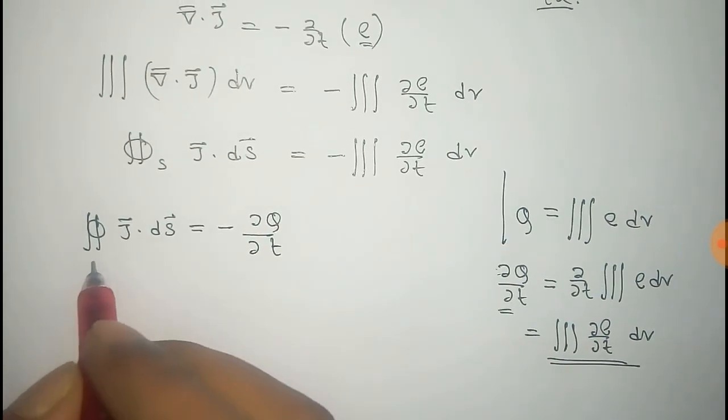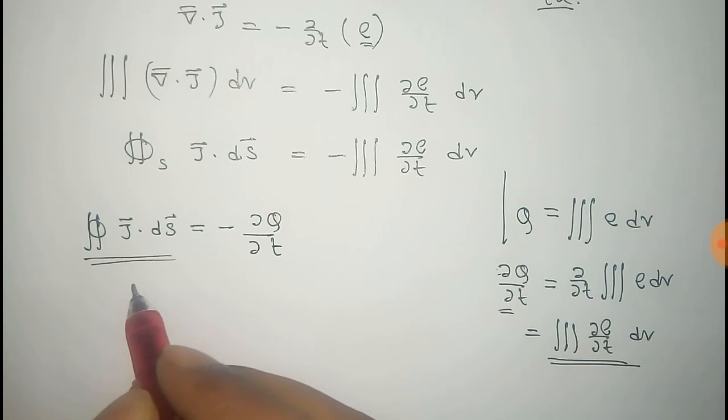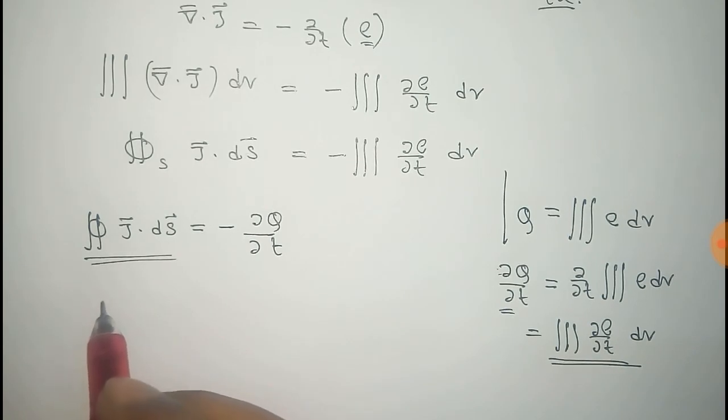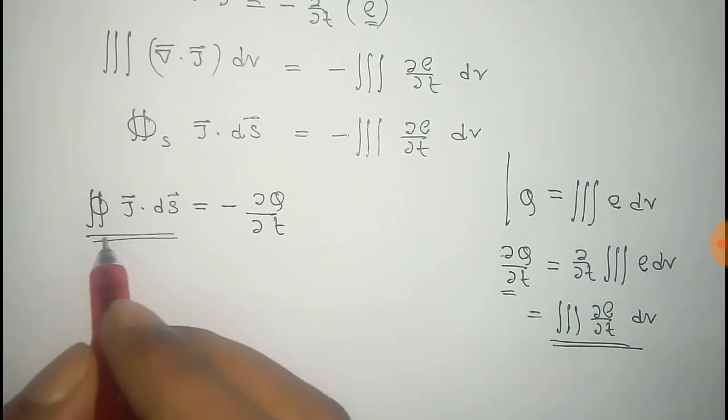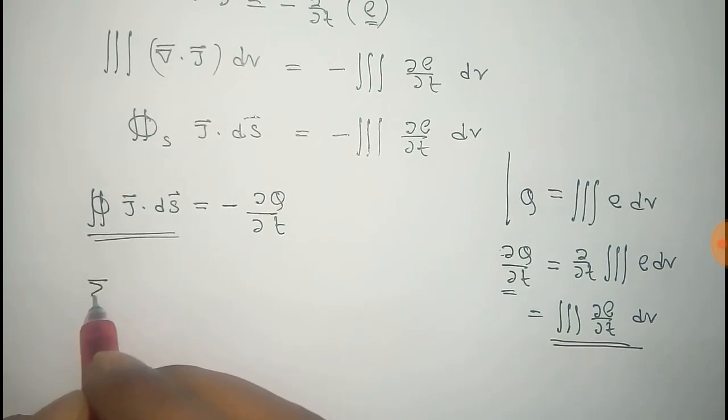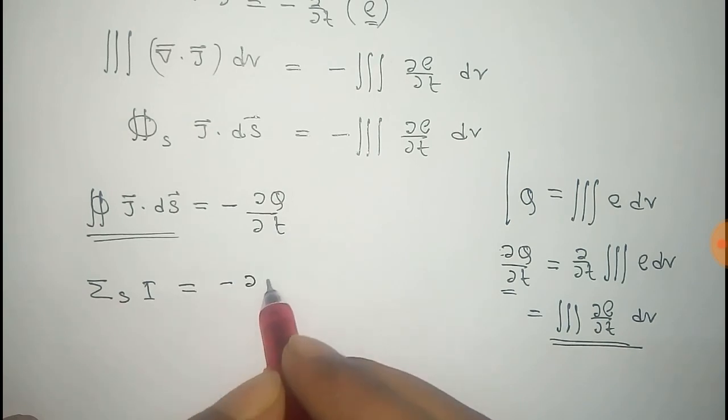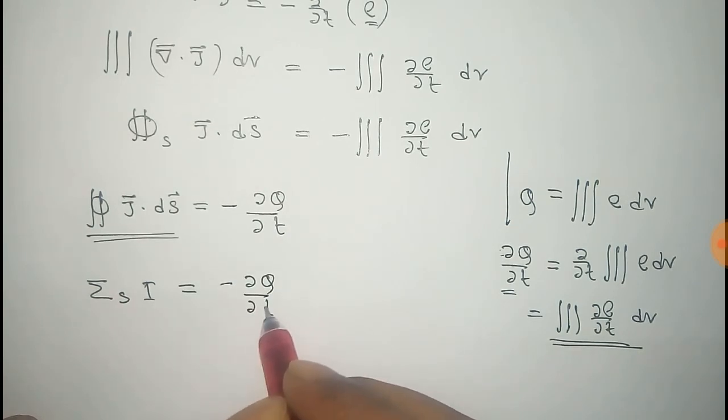Now, the surface integral effectively becomes a sum of currents in all the conductors passing through the surface. So we can write this integral J dot dS as sum over S, I is the current, equals minus del Q del T.